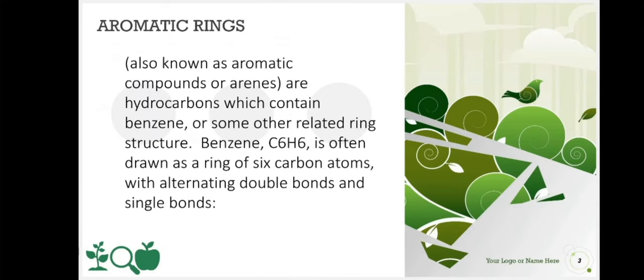Now aromatic rings are also known as aromatic compounds or arenes are hydrocarbons which contain benzene or some other related ring structure. Benzene C6H6 is often drawn as a ring of six carbon atoms with alternating double bonds and single bonds.